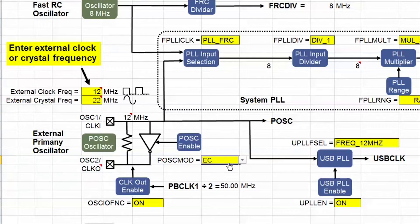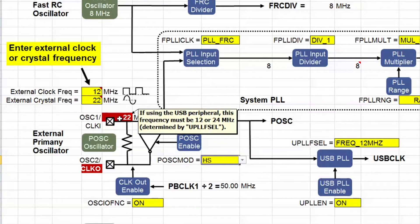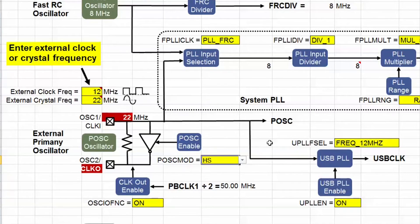If I change this primary oscillator mode setting to expect a high speed crystal, you will see the cell turn red, indicating this setting is not valid. According to the datasheet, and this little message box here, the input frequency must be either 12 or 24 MHz if I'm using the USB peripheral.